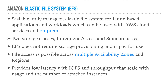Key differences to recap: EBS Multiattach serves instances in a single AZ, supports up to 16 Linux Nitro-based servers, and has limited provisioned IOPS. EFS, by contrast, can serve instances across multiple AZs or regions, and even on-premises. Thousands of servers can access the same EFS store, and its IOPS and throughput scale automatically with usage and the number of attached instances.